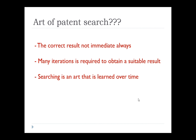First, let me explain the effectiveness of patent search. Number one: the correct result is not always immediate. The keywords we use always matter. If we use random keywords it never works well. We also cannot rely only on specific keywords — we need to look for keyword synonyms, alternative keywords, and related keywords as well.